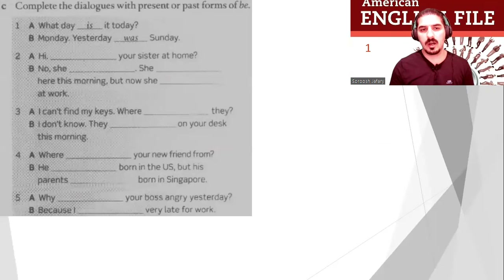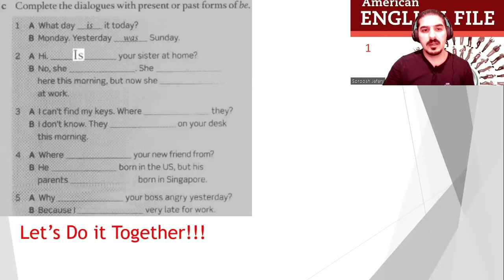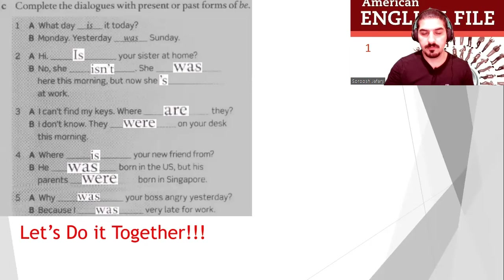Now complete dialogues with the present or past of be. Number one: What day is it today? Monday. Yesterday was Sunday. Number two: Hi, is your sister at home? No, she isn't. She was here this morning but now she's at work. Number three: I can't find my keys. Where are they? They were on your desk this morning. Number four: Where is your new friend from? He was born in the US but his parents were born in Singapore. Number five: Why was your boss angry yesterday? Because I was very late for work.